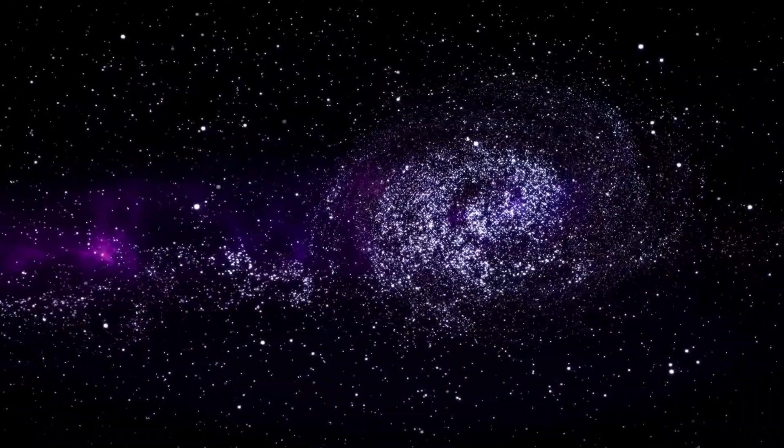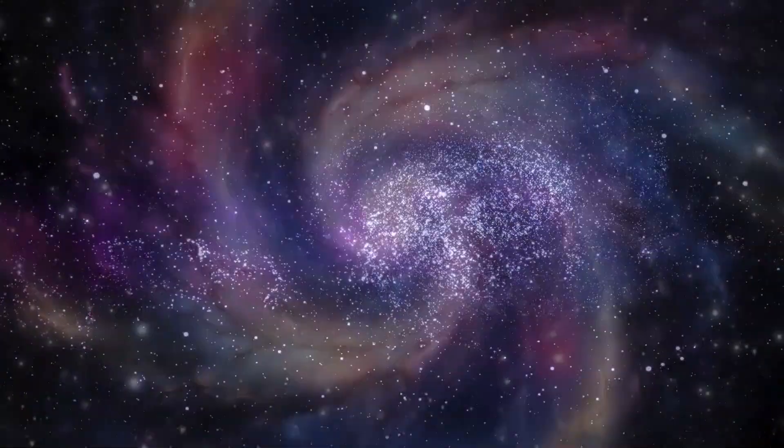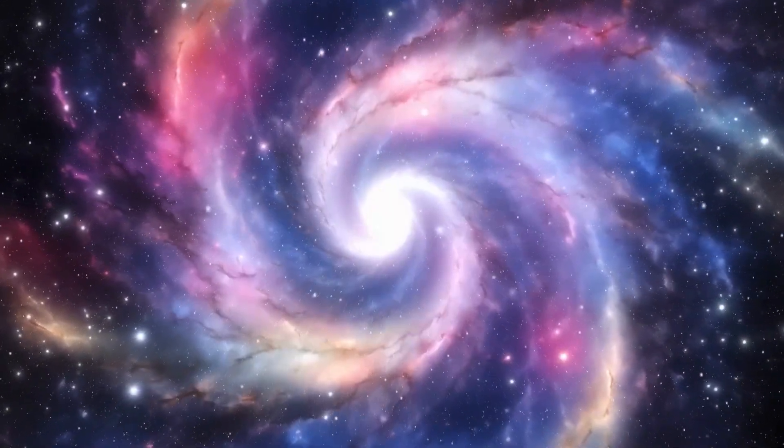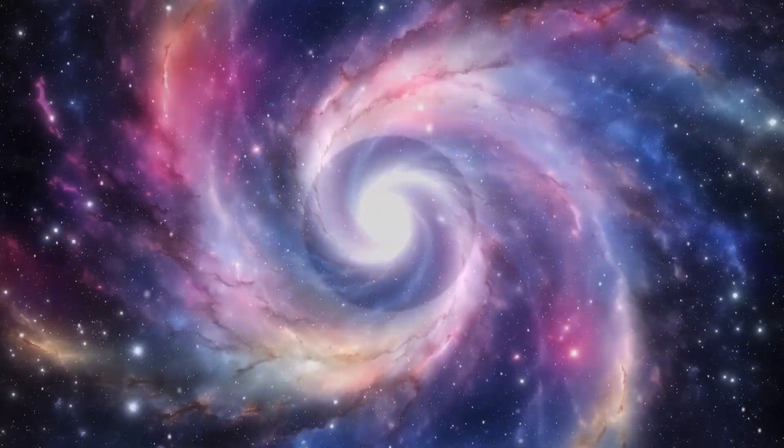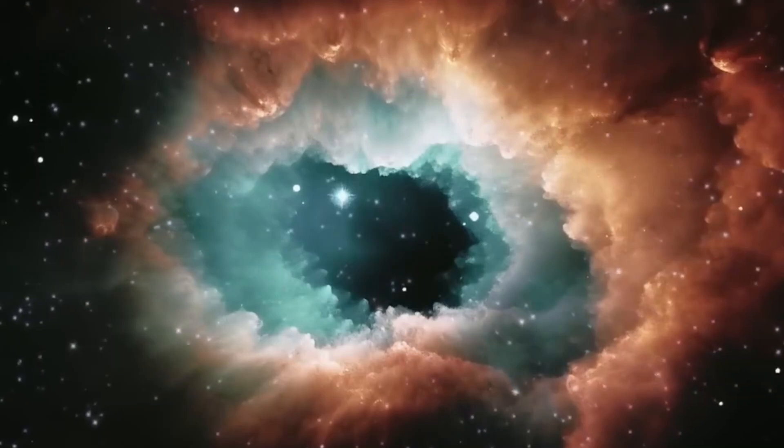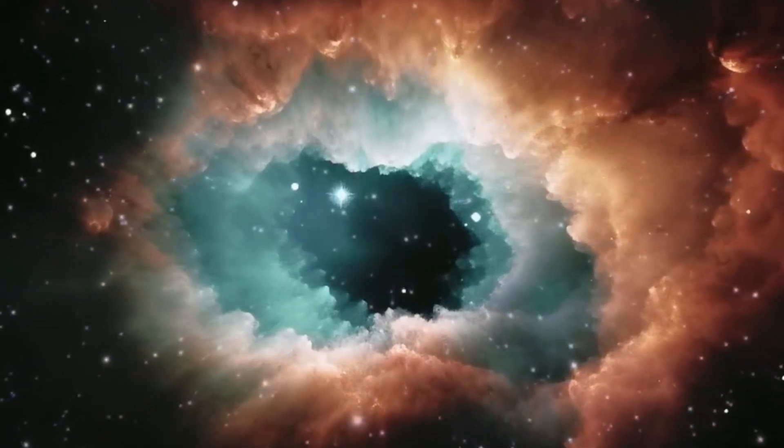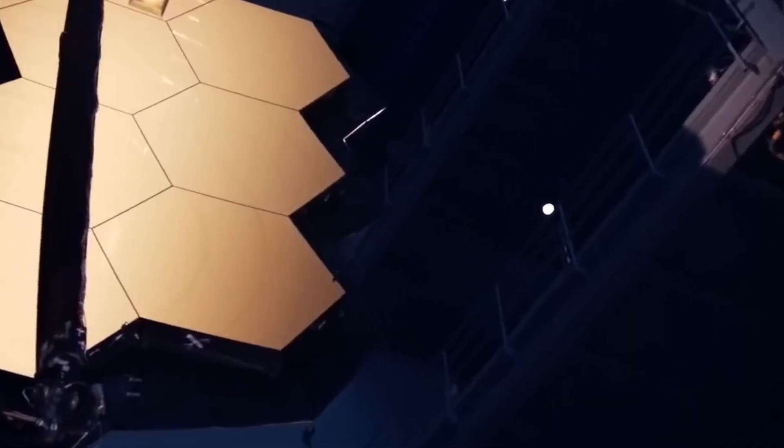This quiet and dark period is known as the Cosmic Dark Ages. Then, dark matter, which we can't see but makes up most of the universe, started to clump together. These clumps attracted atoms, forming the first stars and galaxies, which eventually led to the complex web of galaxies we see today.